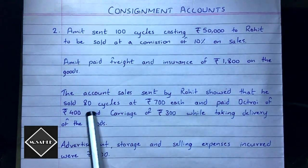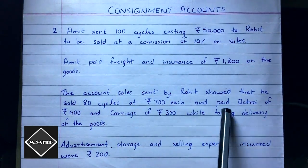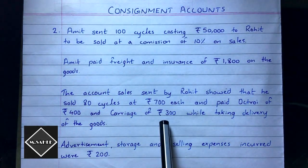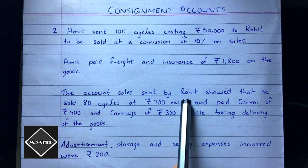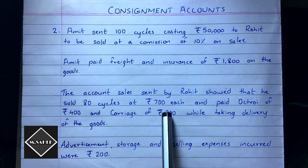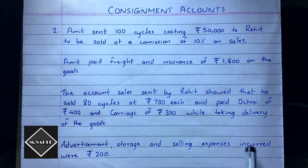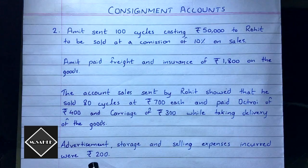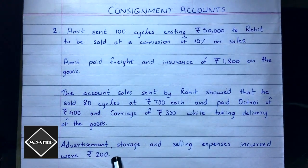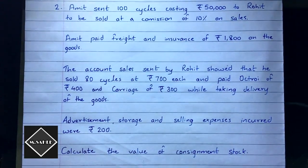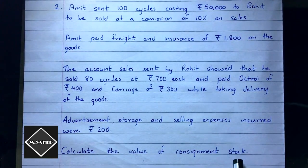The account sales sent by Rohit showed that he sold 80 cycles at rupees 700 each, and paid octroi of rupees 400 and carriage of rupees 300. Rohit also incurred advertisement, storage, and selling expenses of rupees 200. These are also called selling expenses or recurring expenses.